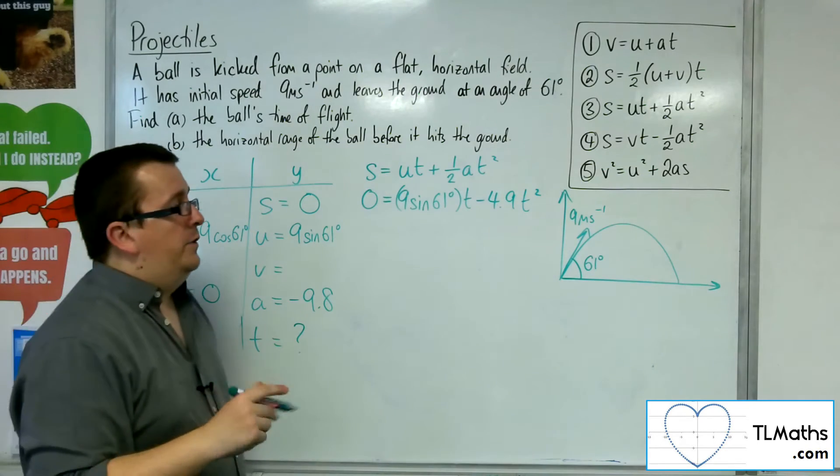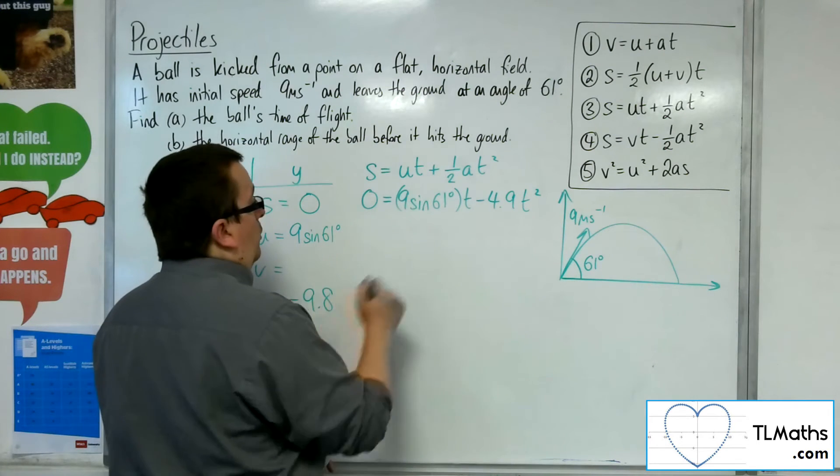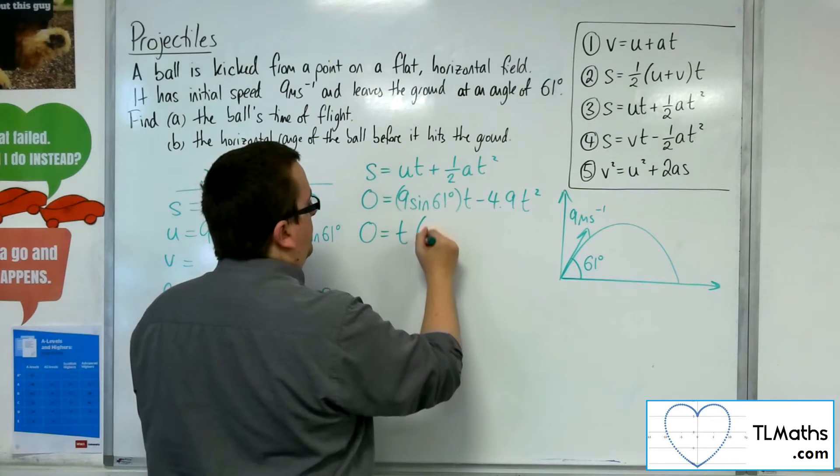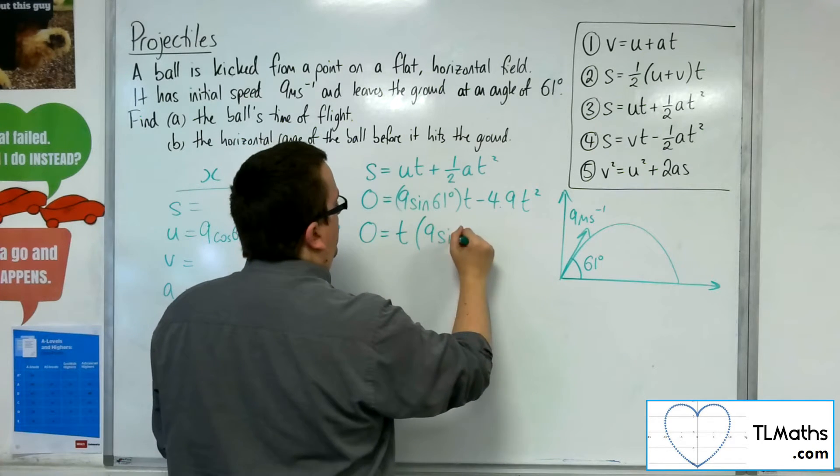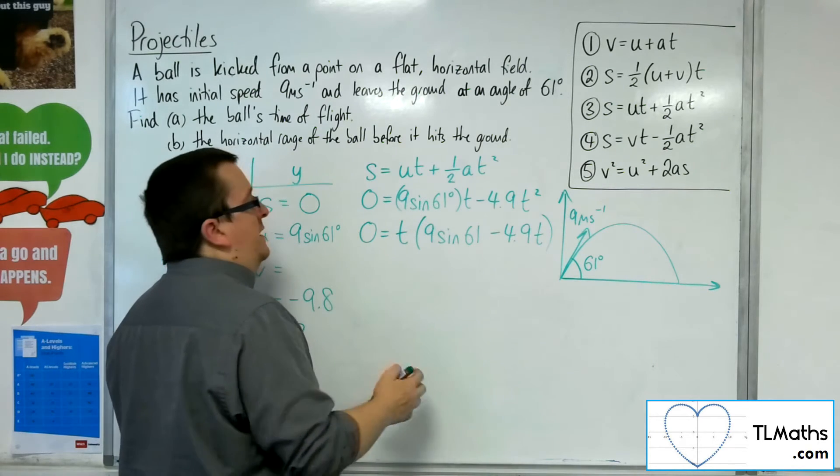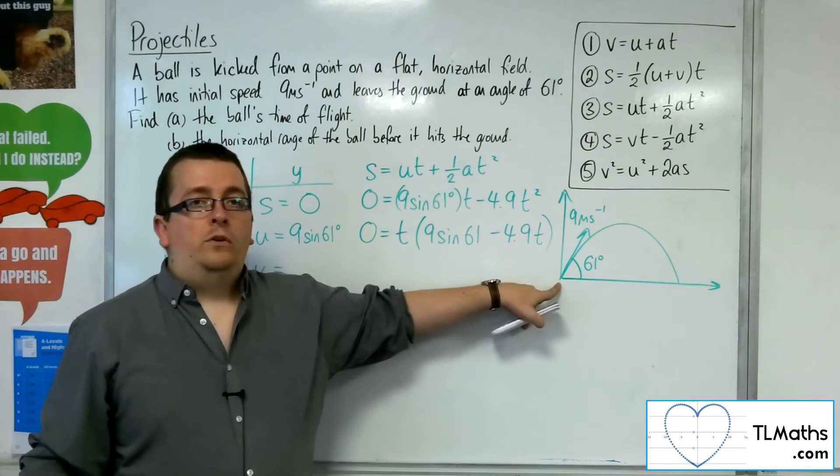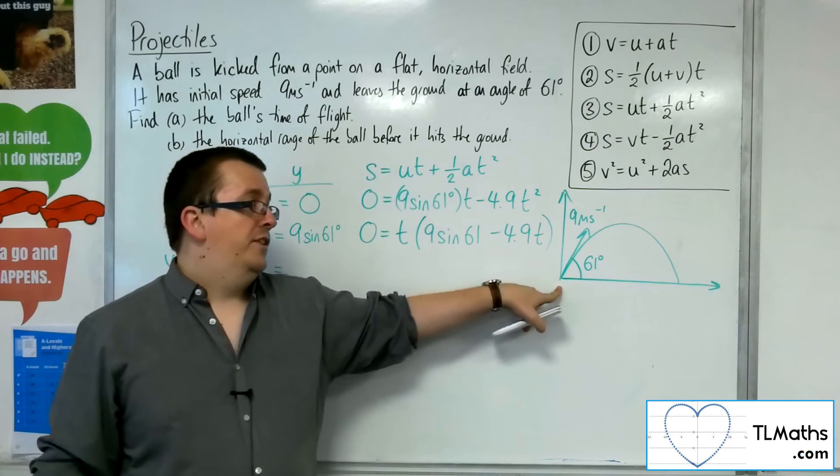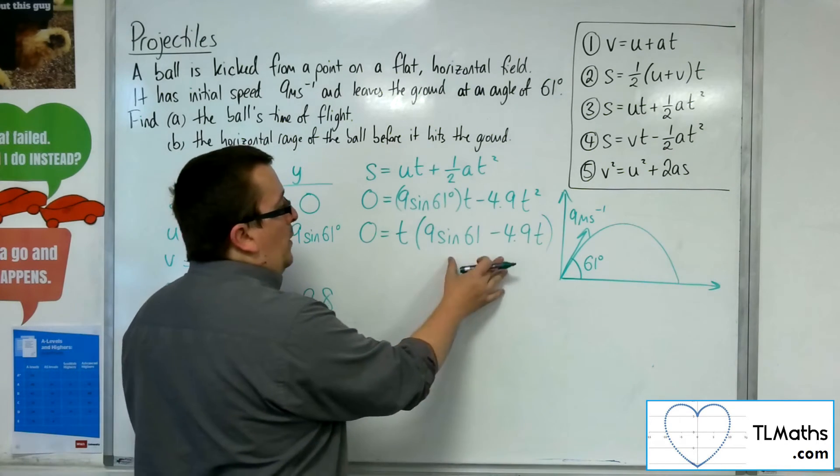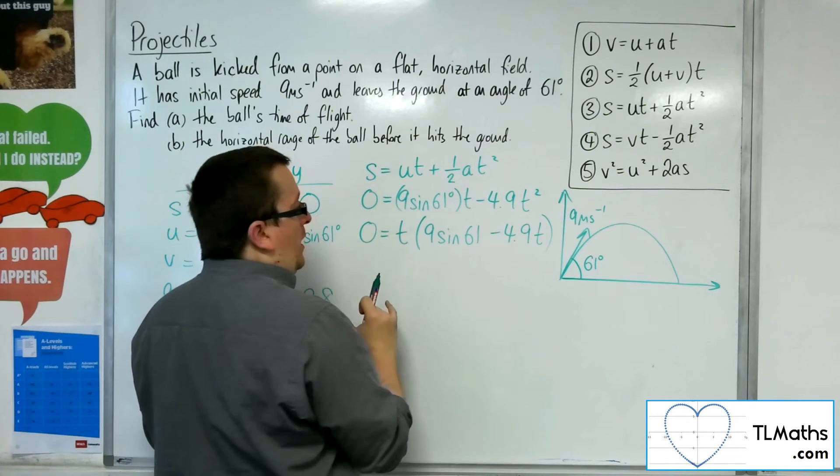So in order to solve that, you can either solve it using your quadratic formula, or the fact that this factorises, because you factor the T out, leaving you with 9 sine 61 take away 4.9 T. Now T is 0 as a solution, because that's where you're starting from. So the vertical displacement, it makes sense that T is 0 as a solution, but we want to focus on over here. So it'll be coming from this equation here.